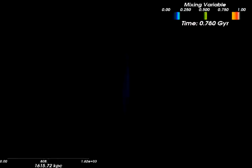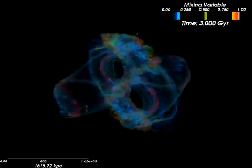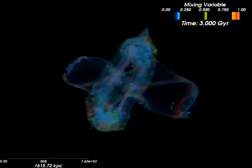The mixing variable M shows the degree to which the two cluster gases have mixed. Initially, there is only minor mixing along the boundary between the two cluster components.